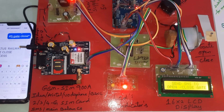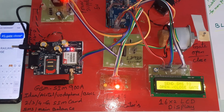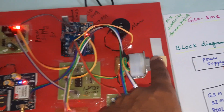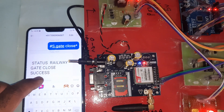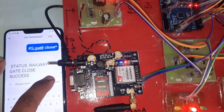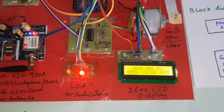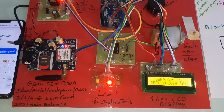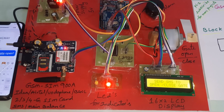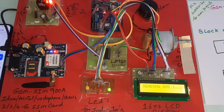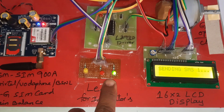Send SMS to the gate open/close system. The red LED indicates the gate is closed. To open, send: hash capital S dot G-A-T-E space O-P-E-N star. Gate open — sending SMS — green LED on.